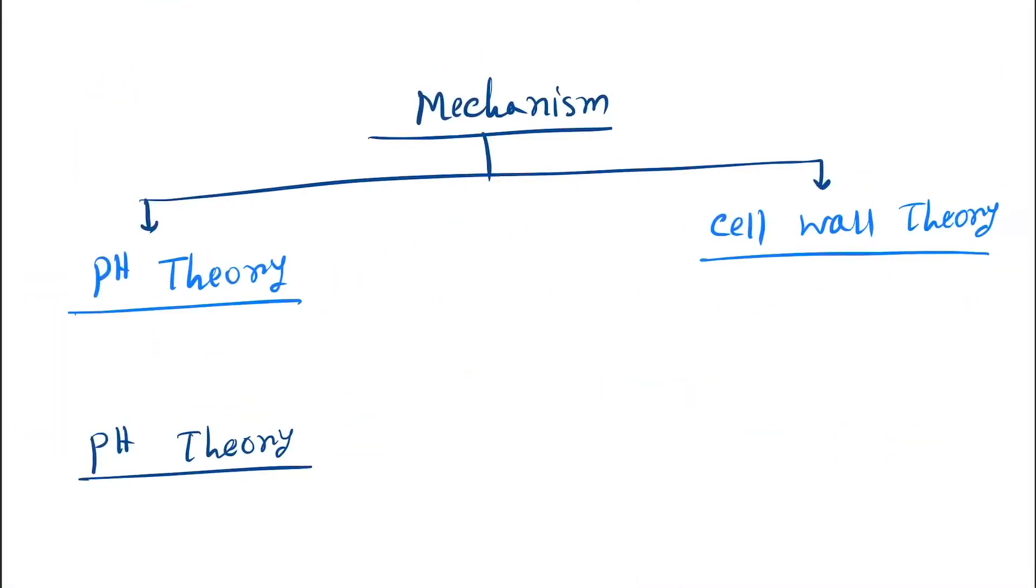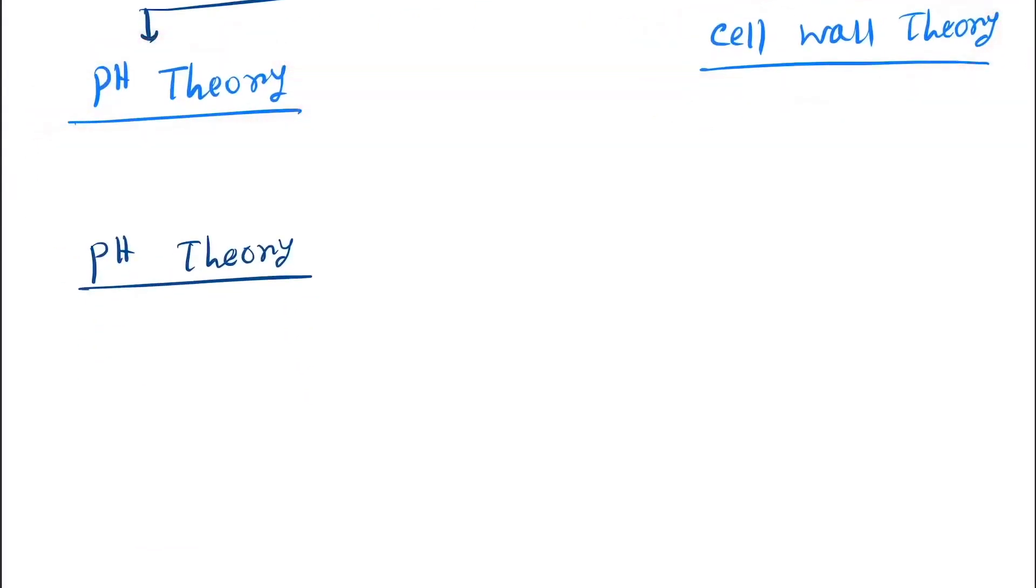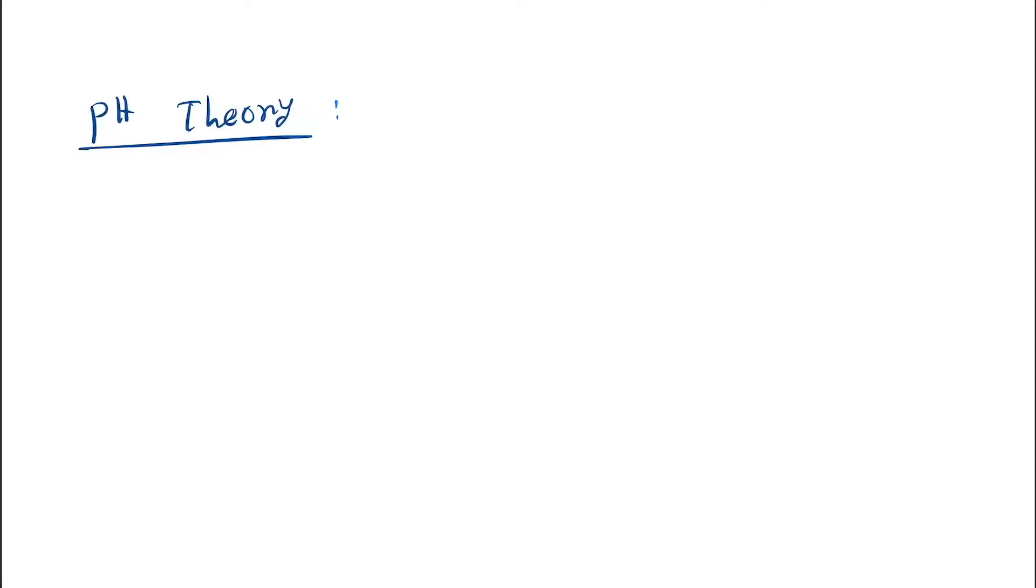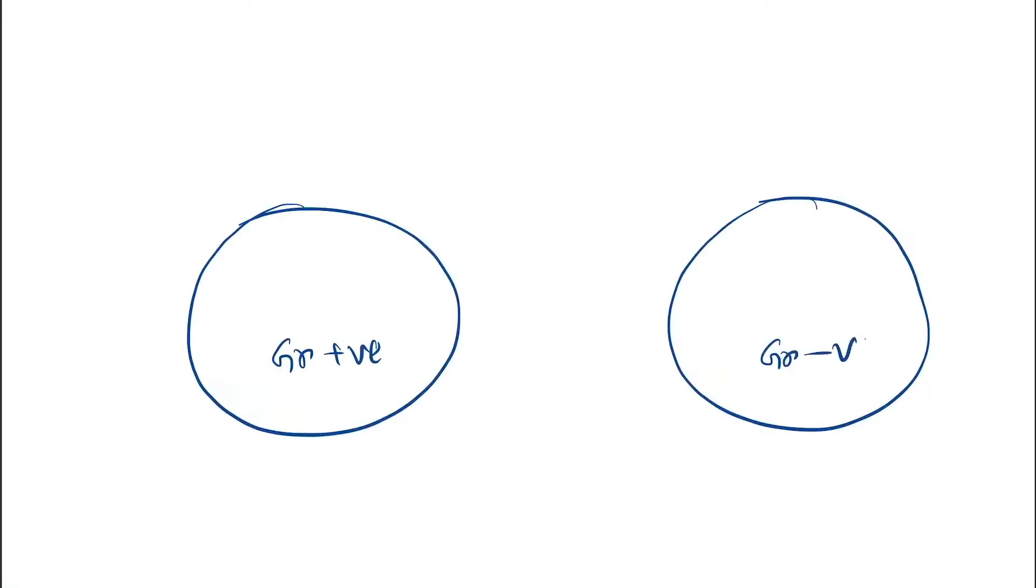Now come to the mechanism. There are two mechanisms: first is pH theory and second is cell wall theory. Let's understand the pH theory. In Gram staining there are two cells - let's draw this. This is gram positive and this is gram negative.